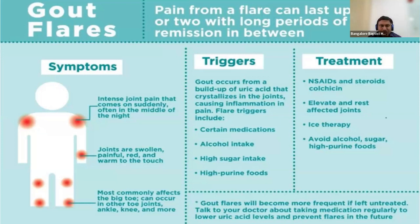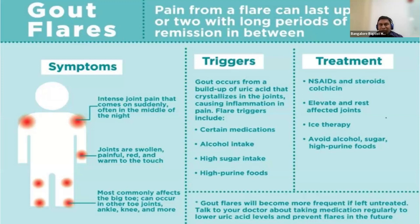Though gout most commonly affects the first toe, it can affect other joints. Some ways to prevent a trigger or attack of gout: avoid alcohol, high sugar-containing fluids like Coke, Pepsi and other carbonated drinks, and high purine or high protein diet, especially from non-vegetarian food. Avoiding red meat in particular can prevent an attack of gout. Certain medicines like pain medicines and diuretics can also increase uric acid levels, so consult your doctor to check if hypertensive or other medicines are triggering gout attacks.